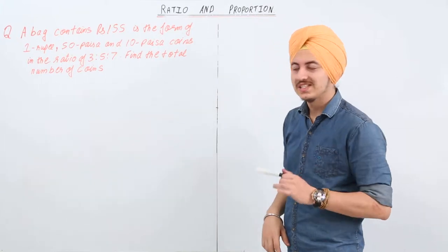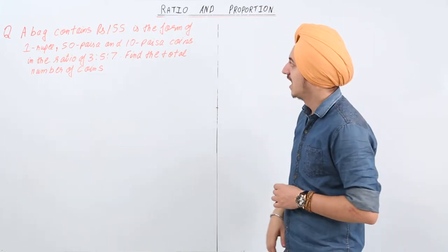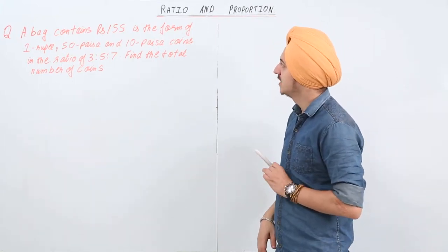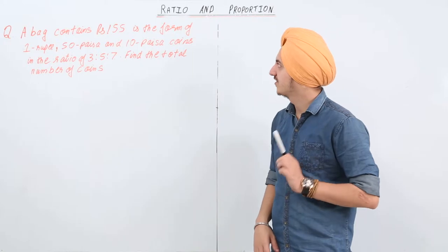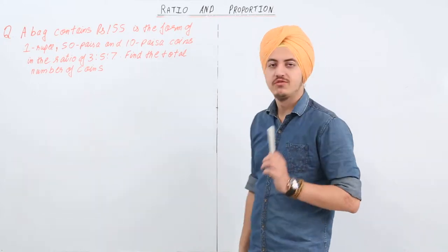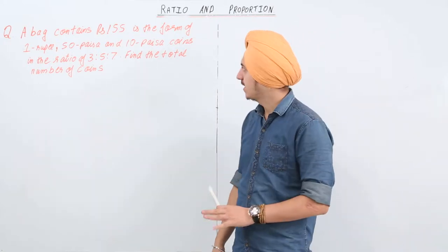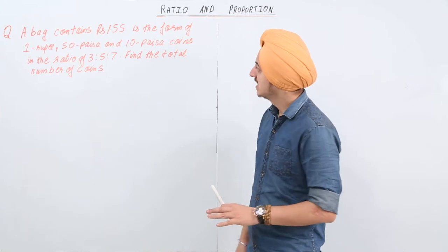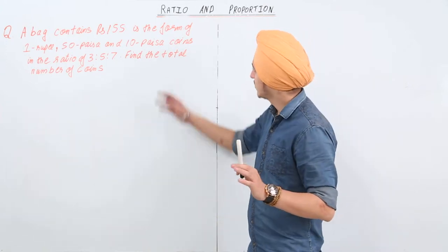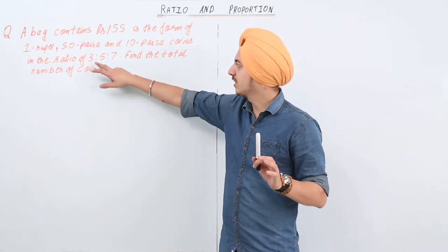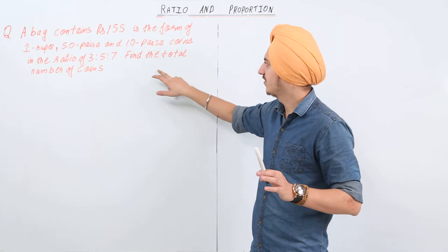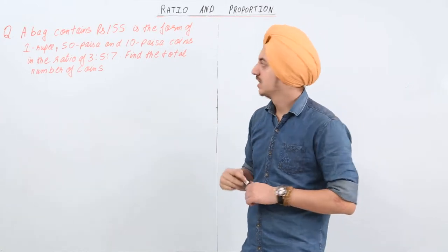A bag contains rupees 155 in the form of one rupee, 50 paisa, and 10 paisa coins in the ratio of 3:5:7. Find the total number of coins.